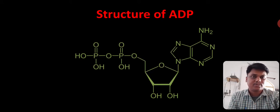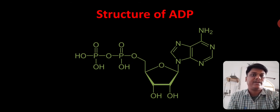See the structure of ADP, you will find that there are only two phosphate groups in their structure. And if we remove the hydrogen atom from the phosphate group, we will find that it has three negative charges on their structure.